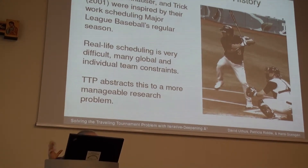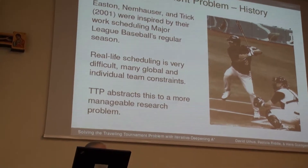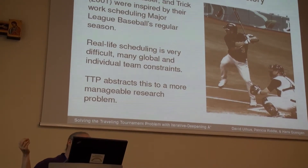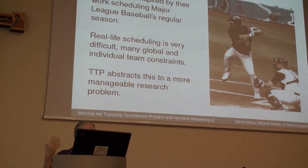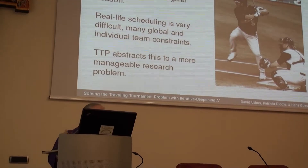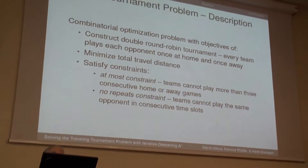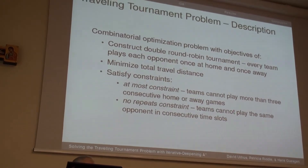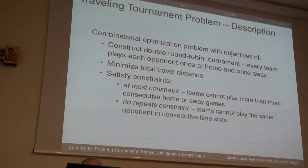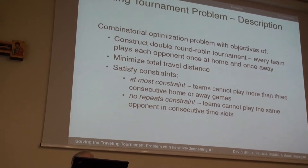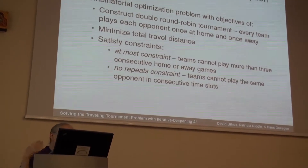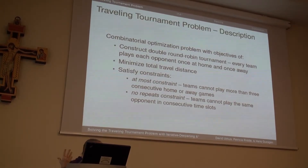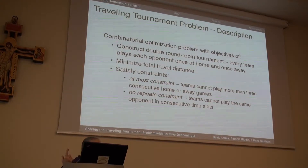In real life scheduling, at least in Major League Baseball, there are all sorts of constraints — general constraints and specific constraints of certain teams. The TTP problem tries to abstract all those specific things and give a general combinatorial optimization problem. They construct a double round robin, meaning each team plays every other team twice, once at each team's home, and you want to minimize the total travel distance. You also have hard constraints: at most three consecutive away or home games, and no playing the same team back to back.